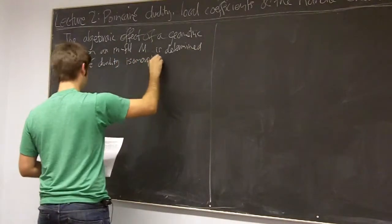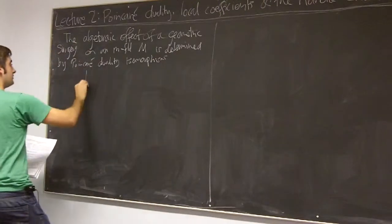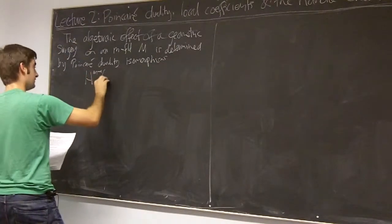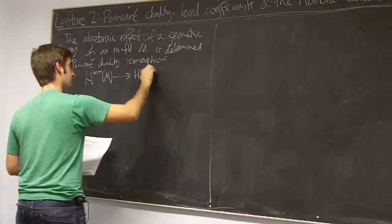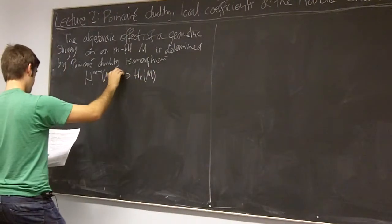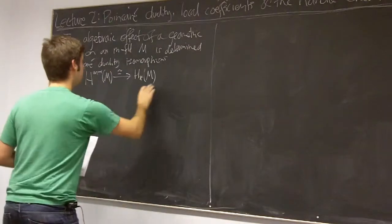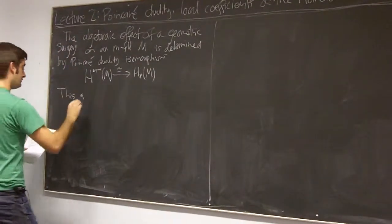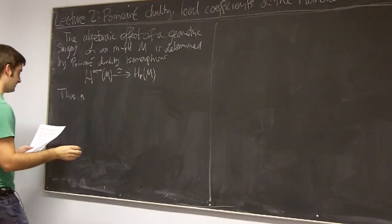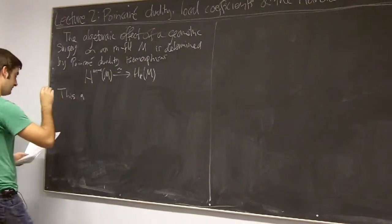Isomorphisms. So from H_{m-*}(M) to H^*(M). And Poincaré duality is a global expression of the local property of being a manifold.